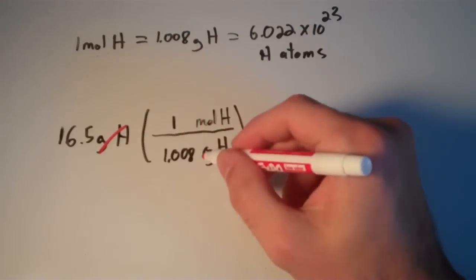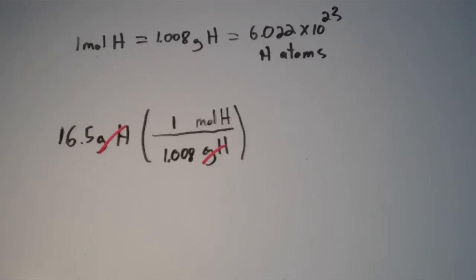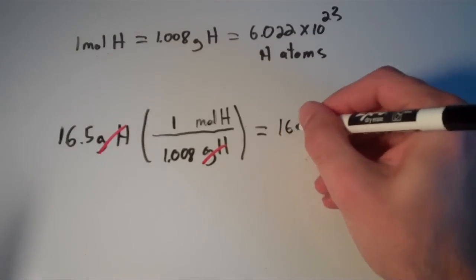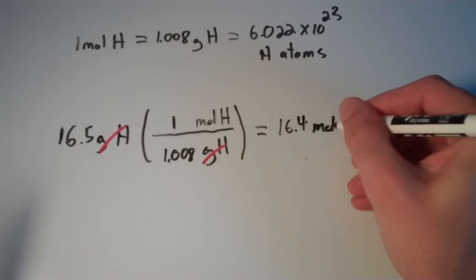Grams of hydrogen cancels out, and we're left with nothing but moles of hydrogen. And that gives us 16.4 moles of hydrogen.